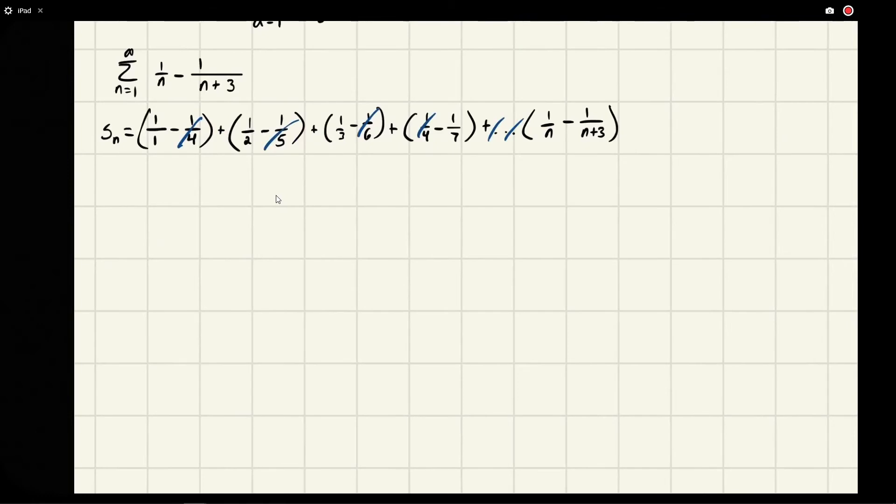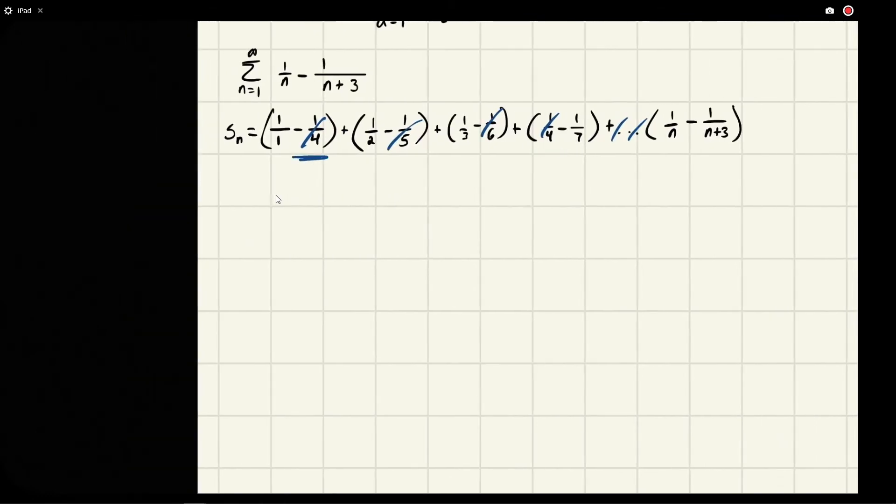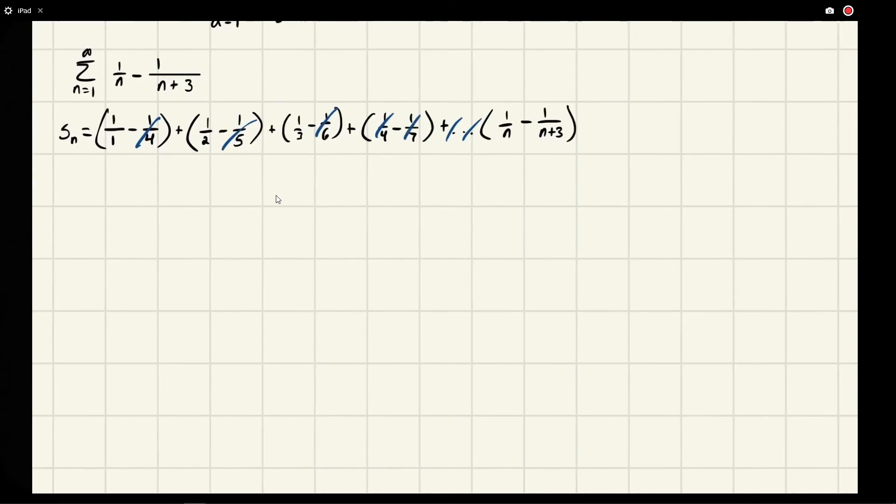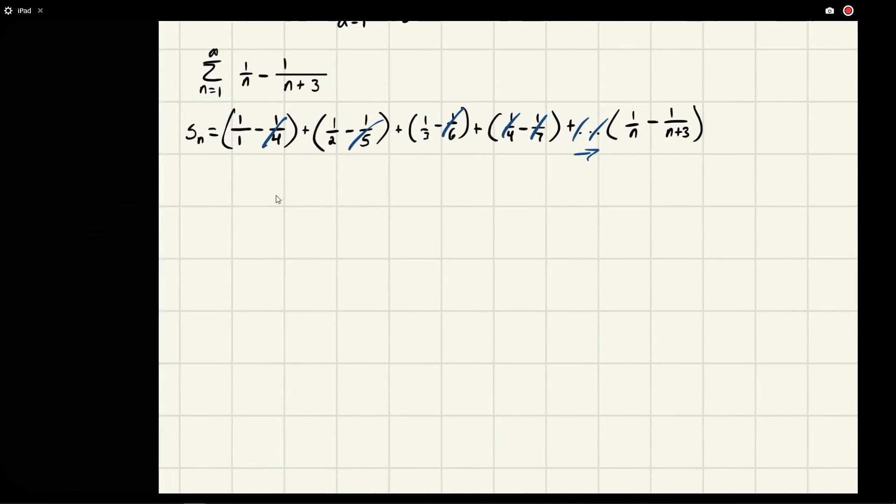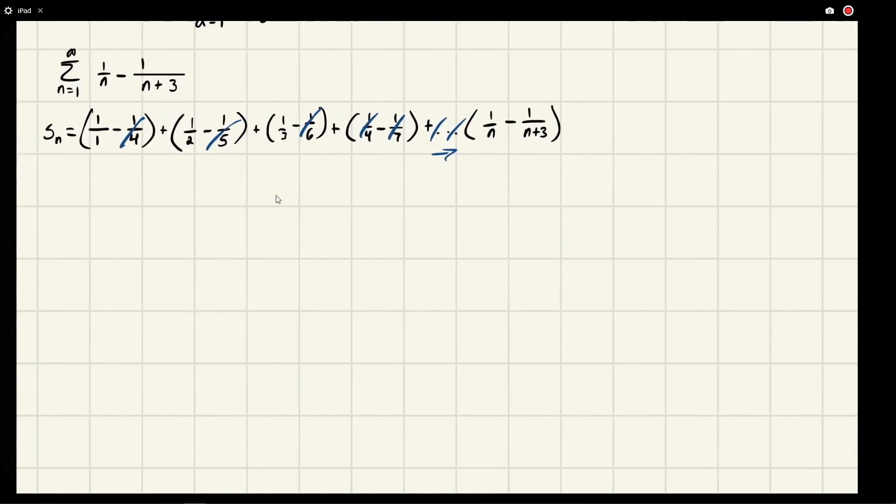Right, it would keep going. And then from here this 1/4 would cancel with this 1/4, and from here on every term would cancel, like there'd be a 1/7 somewhere up there, a positive 1/7, and so on and so forth. So these first few terms survive.